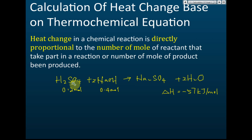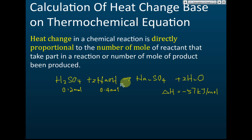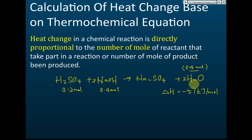One mole of sulfuric acid produces two moles of water, so 0.2 mol of sulfuric acid produces 0.4 mol of water. Alternatively, the stoichiometric ratio shows the moles of sodium hydroxide equal the moles of water produced — since NaOH is 0.4 mol, the water produced is also 0.4 mol. So the water produced is 0.4 mol.